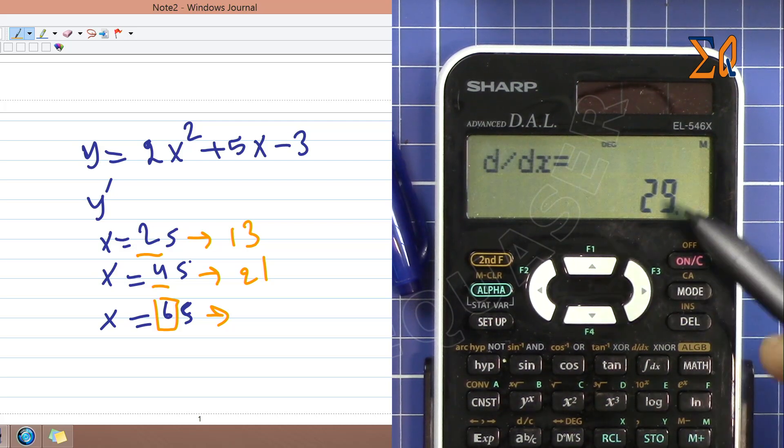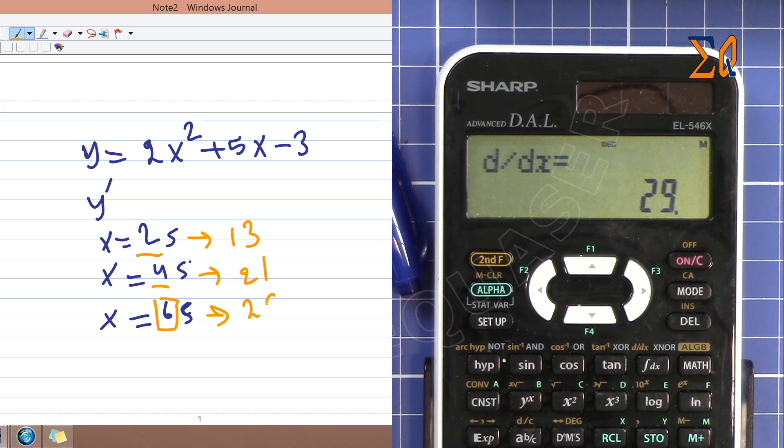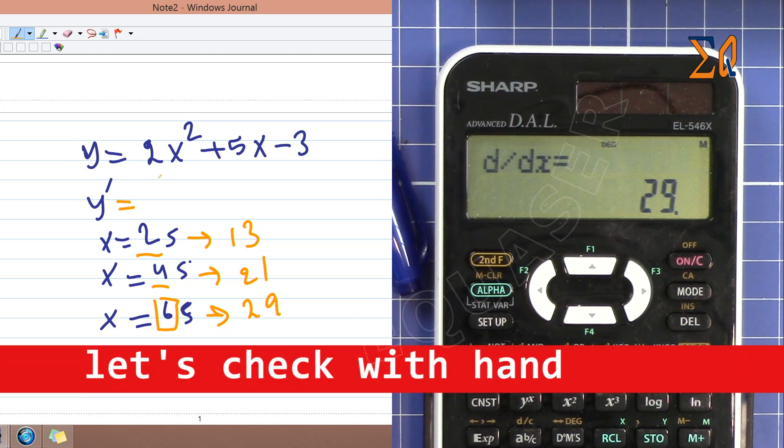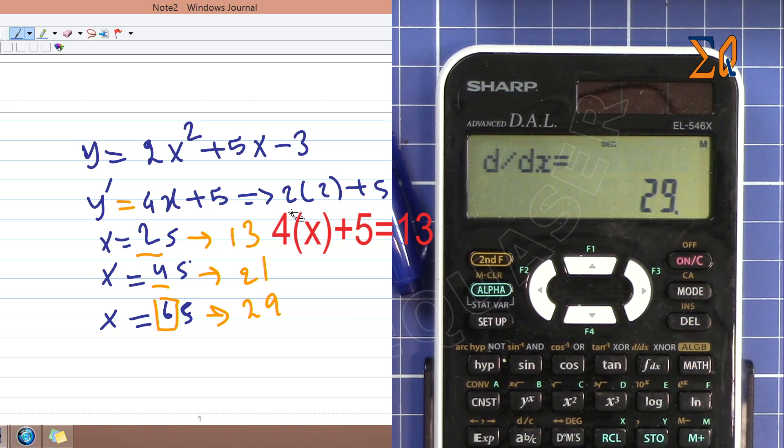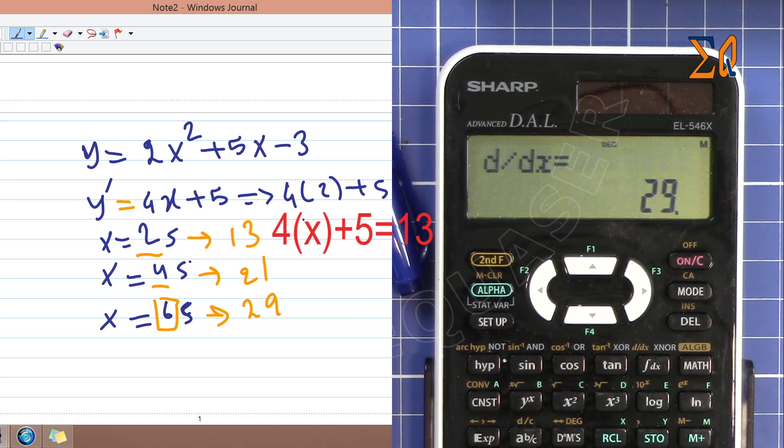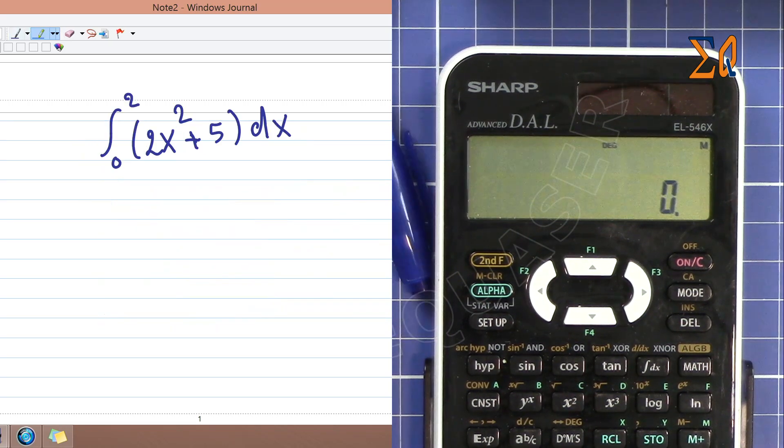I take the derivative of that. You can see that 2 times 2 is 4x, and then plus 5, so this will be 0. Now if I plug in here 2, so 4 times 2 is 8, plus 5 is 13, and you can see.